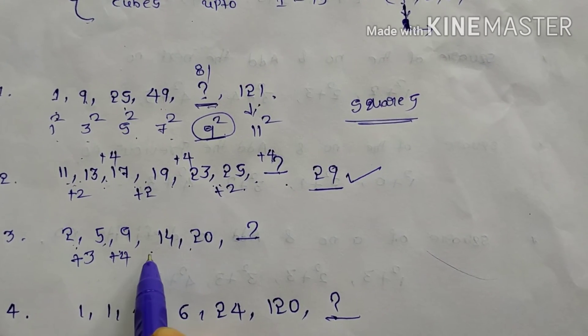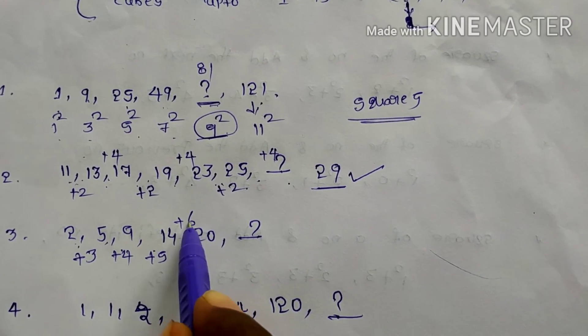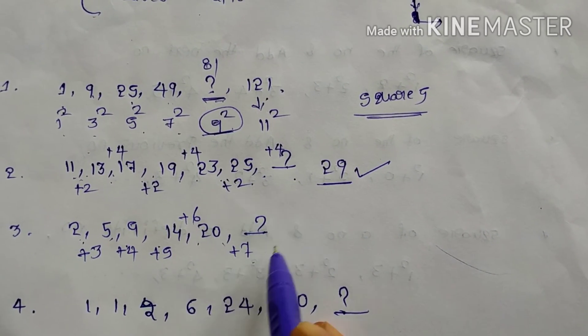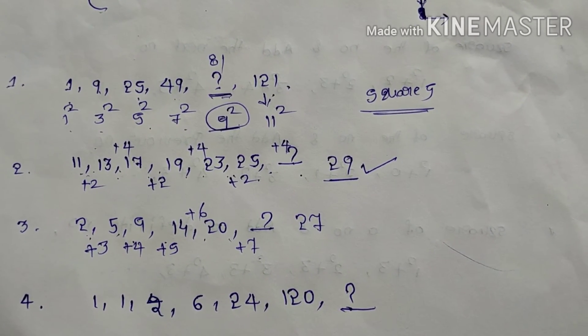2 plus 3 is 5. 5 plus 4 is 9. 9 plus 5, 14. 14 plus 6, 20. That means here 3, 4, 5, 6, plus 7. That means 20 plus 7 is 27 only your answer.